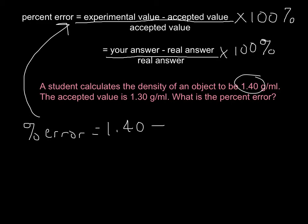We're going to subtract off the accepted value right here, 1.30, divide by the accepted value, 1.30, and then times all that by 100%.